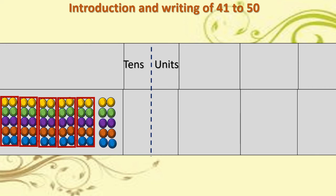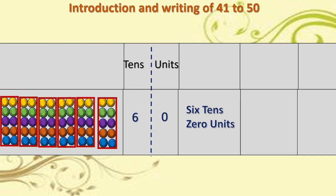Together we got ten beads — these ten beads are arranged in one block. What happened now? There are no singles, but one more ten is added to the five tens. So, altogether five plus one — that is six tens and zero units. Six tens and zero units. The number formed is sixty. S-I-X-T-Y, sixty. And how to write sixty: six and zero, that is sixty.